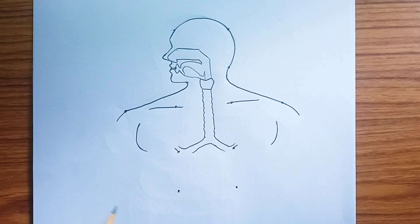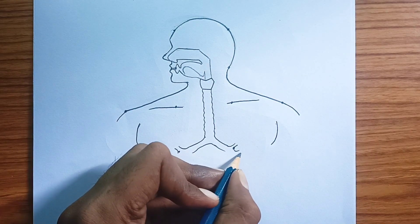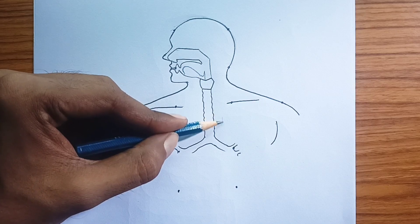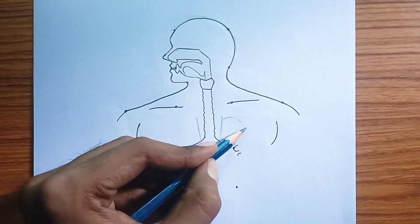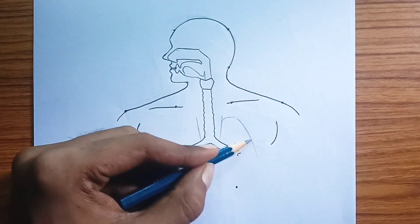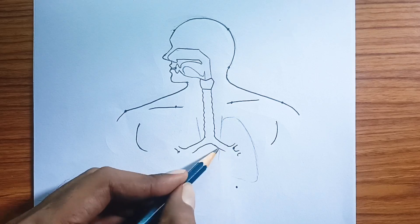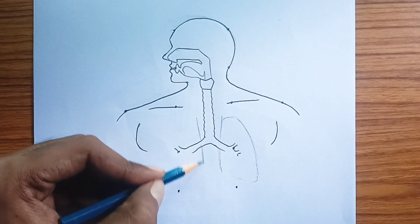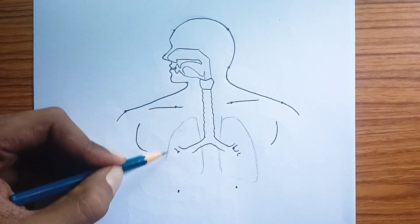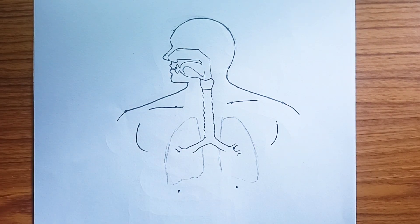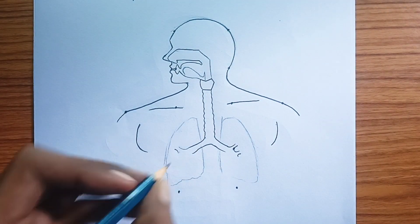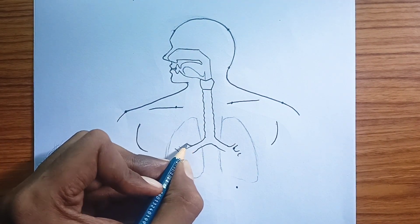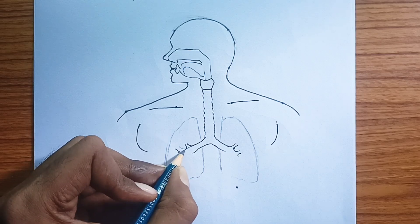Nasal cavity. This is the primary entry point for air into the respiratory system. It warms, moistens, and filters the inhaled air before it proceeds further. Pharynx. Often called the throat, the pharynx is a muscular tube that serves as a passageway for both air, from the nasal cavity, and food, from the mouth.